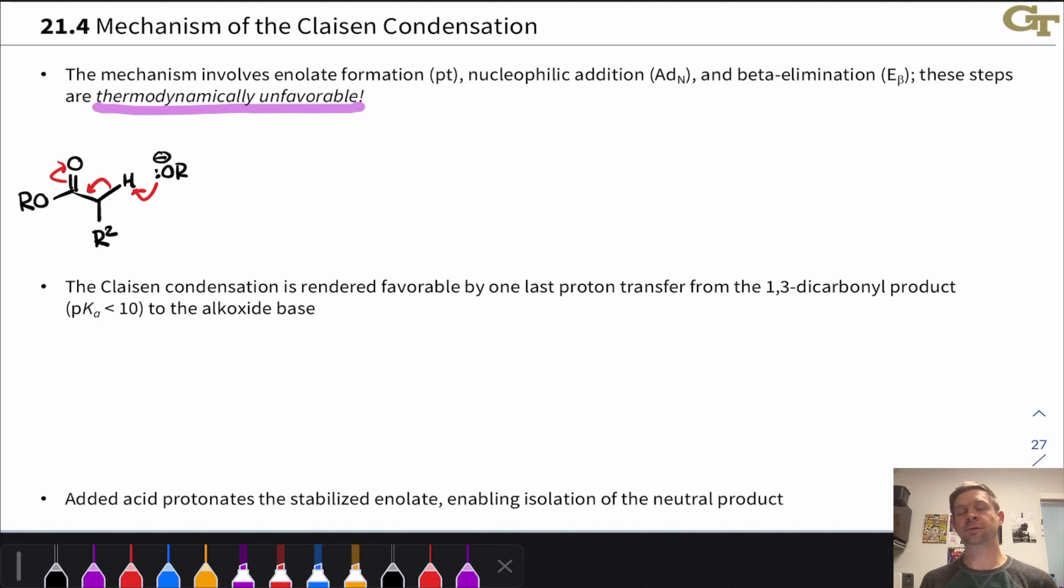The first step is deprotonation at the alpha carbon of the ester. This is going to generate an ester enolate, and this is disfavored. If you think about pKa here, the alcohol HOR is much more acidic than the ester enolate, and so this is actually going to favor the reactants. But we can get it to go a little bit, just as in the aldol condensation.